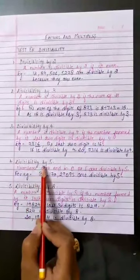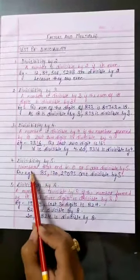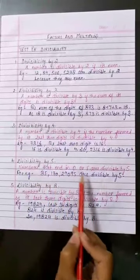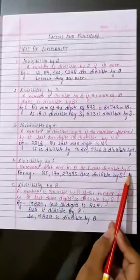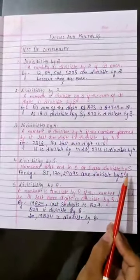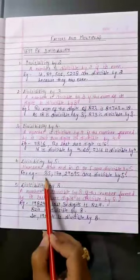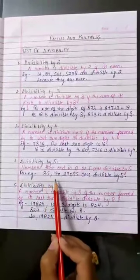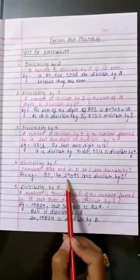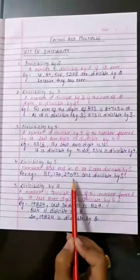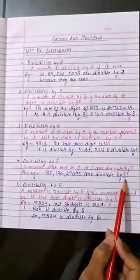Divisibility by 5. Numbers that end in 0 or 5 are divisible by 5. For example, 35, 170, and 29,095 are divisible by 5.